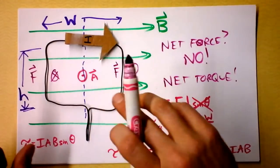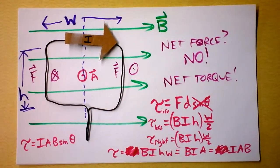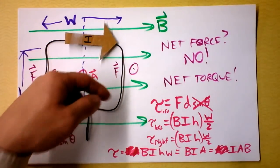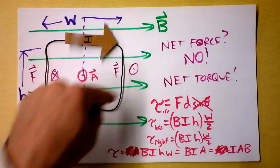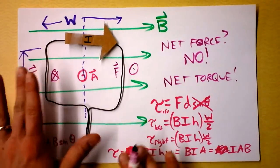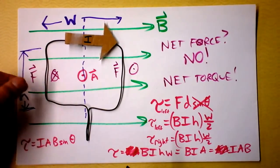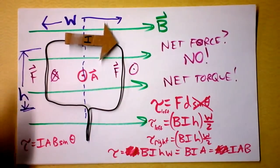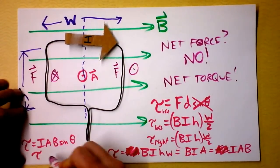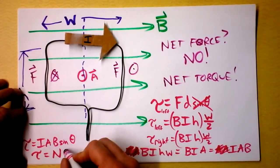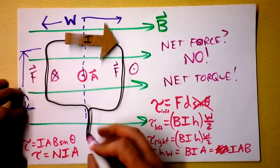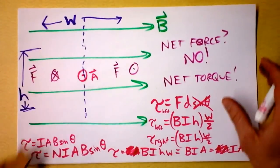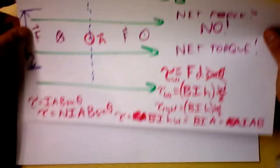What if I had more loops? If instead of leaving the loop, I just went another loop — two loops, three loops, four loops — you can imagine that the force gets bigger and bigger, because it's effectively more and more current as I add more loops of wire. So I can get to this equation: torque is the number of loops times the current times the area times the magnetic field times the sine of the angle between them.